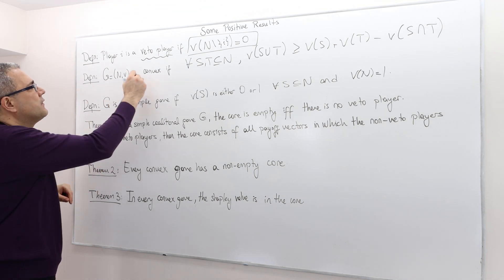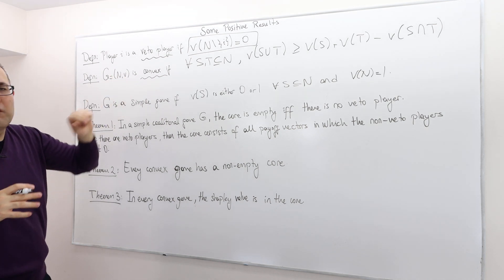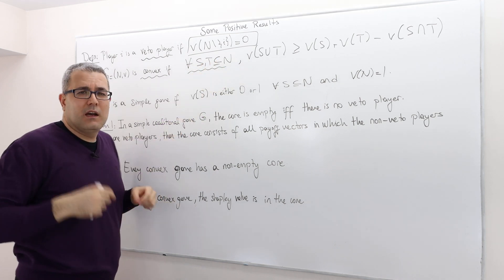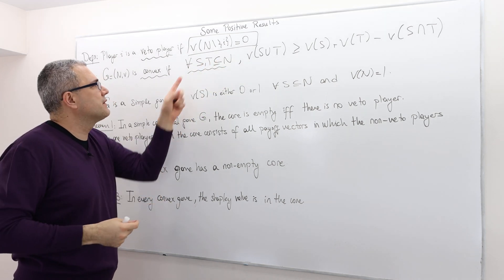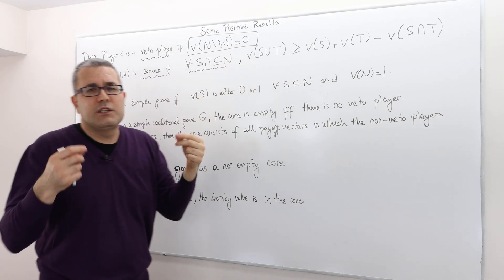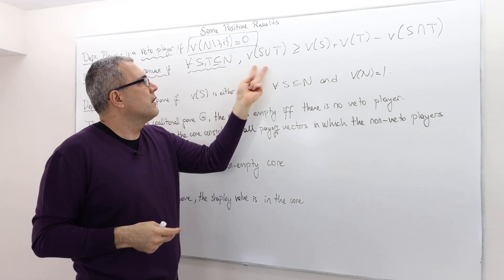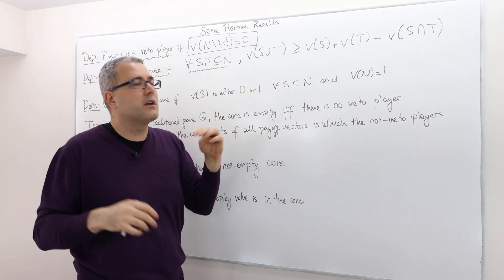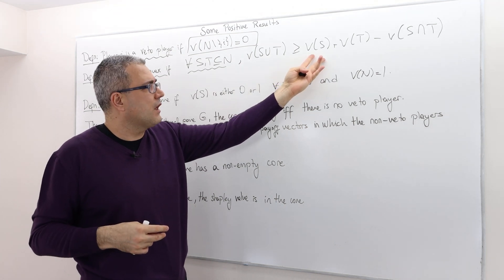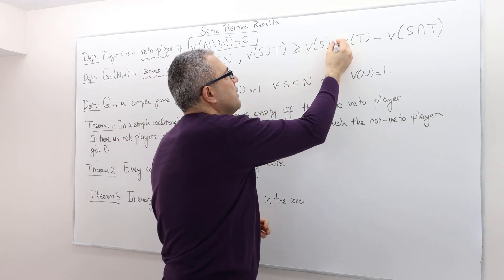The second definition is convexity. So for any game, we call it convex if the following inequality holds for any set, you know, coalitions S and T. Well, what is this inequality? It says whenever I join two coalitions, S and T, well, the worth of this new coalition, a bigger coalition, is greater than or equal to the value of the coalition S plus value of the coalition T minus value of the or the worth of the coalition...